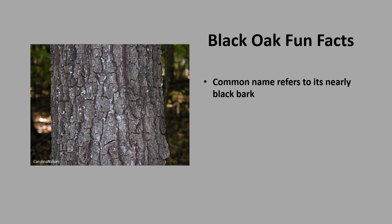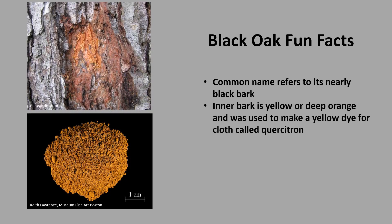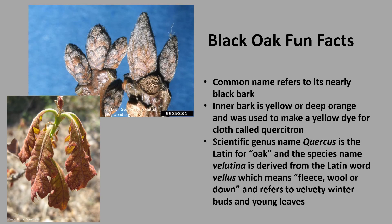Now for a few fun facts about black oak. The black oak's common name refers to its nearly black bark. The inner bark is a deep yellow or orange and was used to make a yellow dye for cloth called quercitron, which is where black oak gets several of its other common names, including dyer's oak, quercitron, and yellow bark oak. The scientific genus name Quercus is Latin for oak, and the species name velutina is derived from the Latin word vellus, meaning fleece, wool, or down, referring to the velvety winter buds and young foliage.